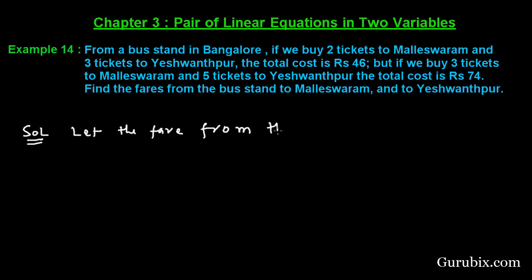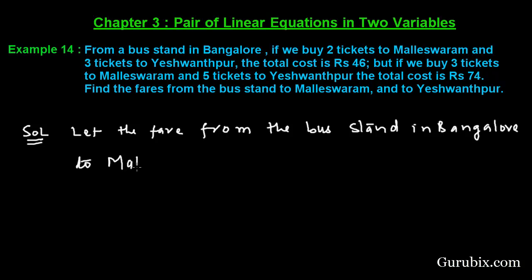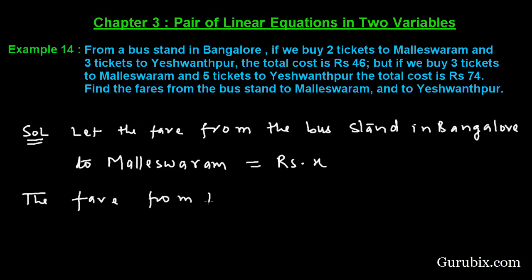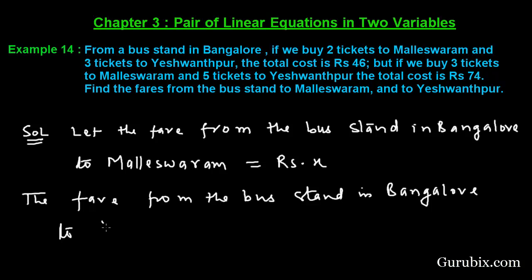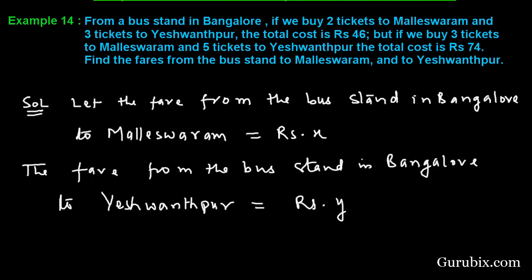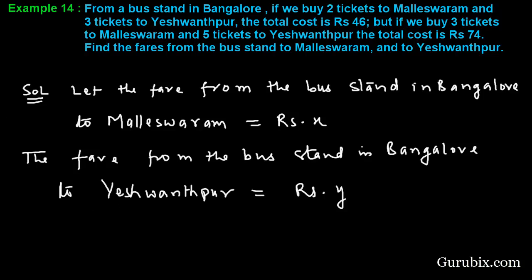Let the fare from the bus stand in Bangalore to Maleshwaram equal rupees X, and the fare from the bus stand in Bangalore to Yashwanthpur equal rupees Y.